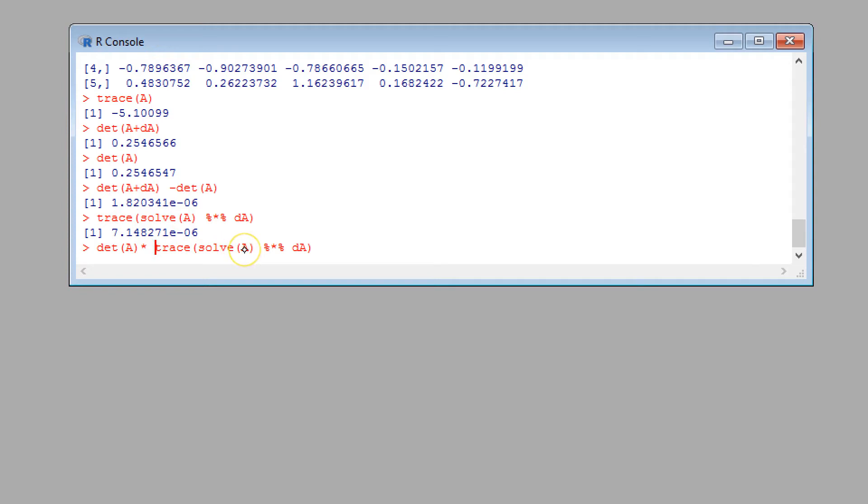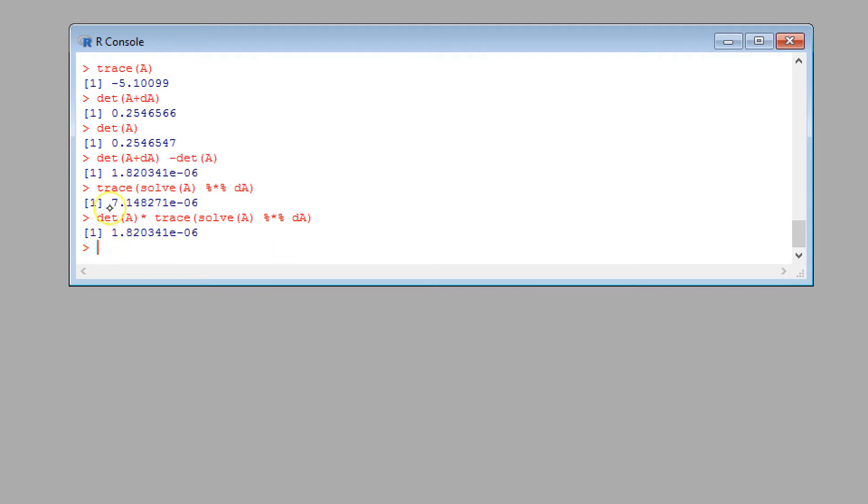I need the trace of A minus 1 is solve A. That's the matrix inverse of A. Matrix multiplied by delta A. And this should be the same. It's not, is it? What have I done wrong here? Ah, it's because I need to multiply by the determinant. Det of A times that. So just to make it absolutely clear, we've got a scalar determinant multiplied by the trace, which is a scalar of the matrix inverse, matrix multiplication with delta A. And this number should agree with that number. There it is. 1.80431. There you go. So they're certainly agreeing to first order.